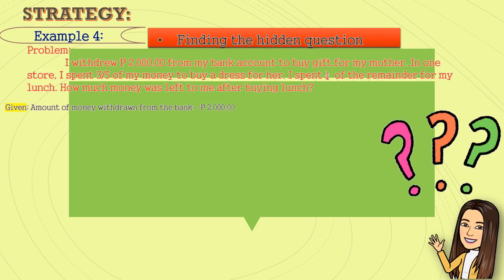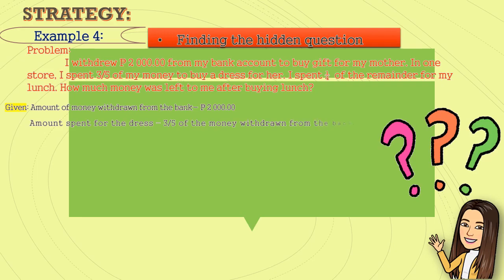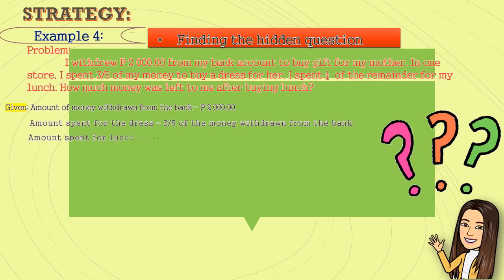Let us understand the problem. Given: amount of money withdrawn from the bank, that is two thousand pesos. Amount spent for the dress, which is three-fifths of the money withdrawn from the bank. And amount spent for lunch, which is one-fourth of the remainder after buying the dress.